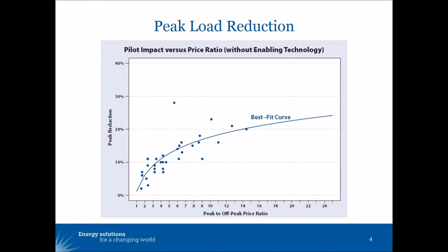The peak load reduction benefits of time-varying rates can be measured in a number of ways. This graphic from our paper, Time-Varying and Dynamic Pricing, shows on the horizontal axis the peak-to-off-peak price ratio, and on the vertical axis the peak load reduction. For example, a 3-to-1 peak-to-off-peak ratio is generally associated with about a 10% peak load reduction.